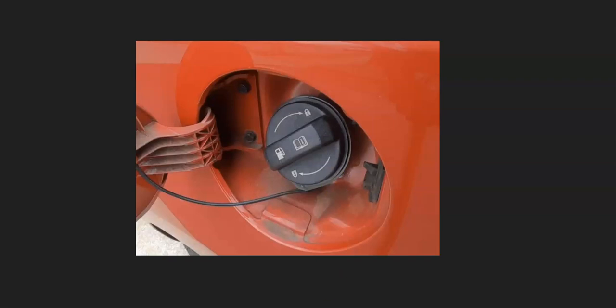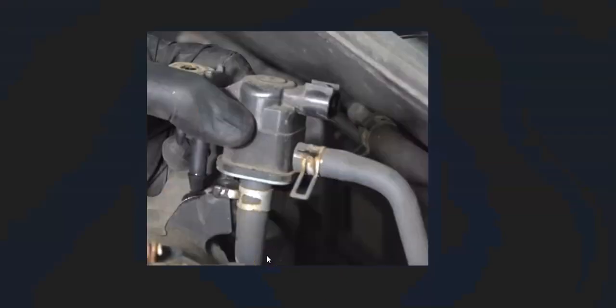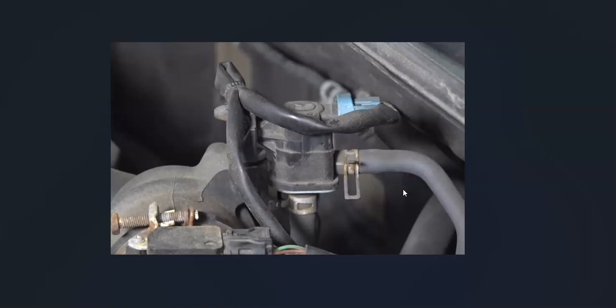The next thing to do is go check the purge valve. This is going to be located up on top of the engine somewhere and it'll basically have two hoses and a wiring harness. One hose is coming from the charcoal canister and one hose is going into the intake manifold.